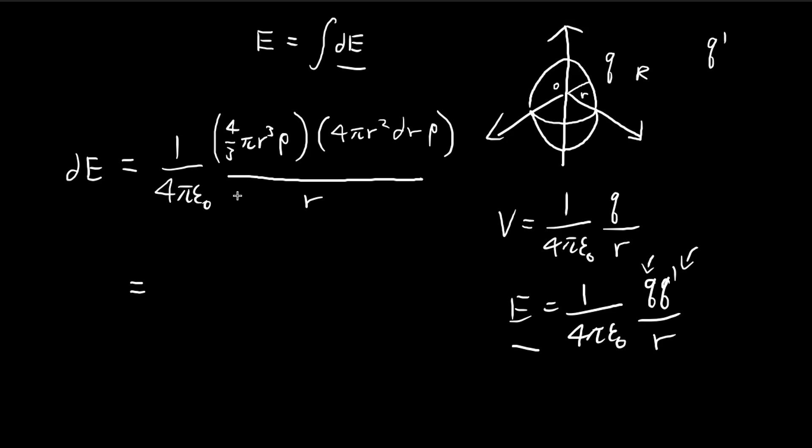So we can actually just integrate this with respect to r, all the way from zero to big R. So let's just try to simplify this a bit. So we have 4 pi rho squared, 4 pi, so just remember rho is the charge density. We have epsilon, that's also a bit of 3 here. And then we have 5 r's, so 4 r's, so r to the power of 4.